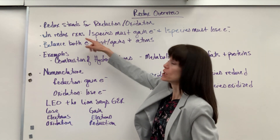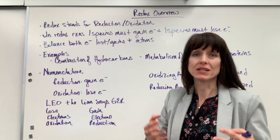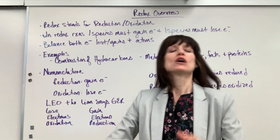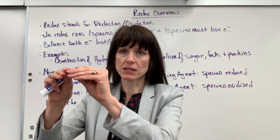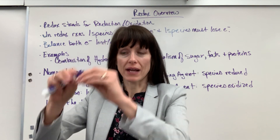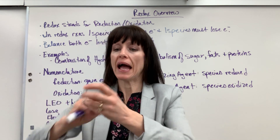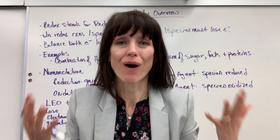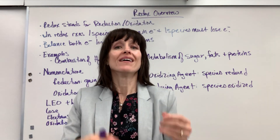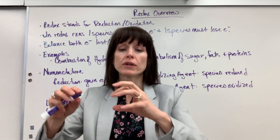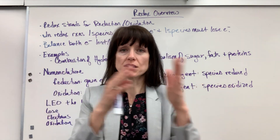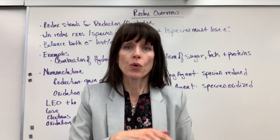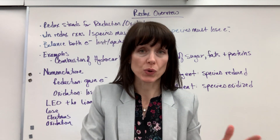In a redox reaction, one species, one atom, is going to gain electrons, and one species, one atom, is going to lose electrons. You have reactants and products — bonds break, atoms rearrange, new bonds form, and you form new products. That's what happens in all chemical reactions. But in redox reactions, not only do atoms rearrange from reactants to products, but electrons also transfer — something loses electrons, something gains electrons.